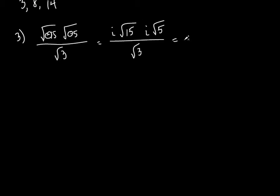Now we can do a couple things on the next step. Let's do the i's first. i times i becomes i squared, which is negative 1. So i times i is negative 1 — we'll just put a negative out in front.